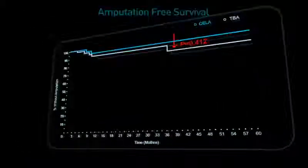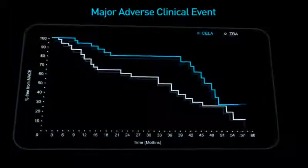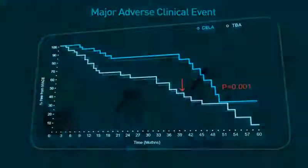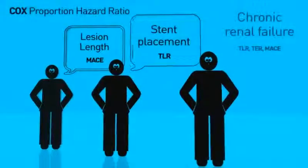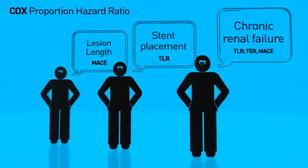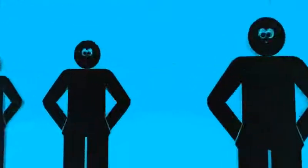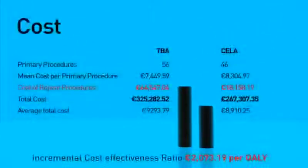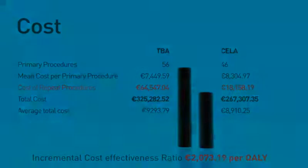Major adverse clinical events at 5 years were significantly more pronounced in the TBA group: 38% versus 66%. Cox proportional hazard ratio showed that chronic renal failure, stent placement, and lesion length are the greatest predictors of TLR, TUR, and MACE. Laser proved to be significantly more cost-effective than TBA, with an incremental cost-effectiveness ratio exceeding €2,000 per QALY.